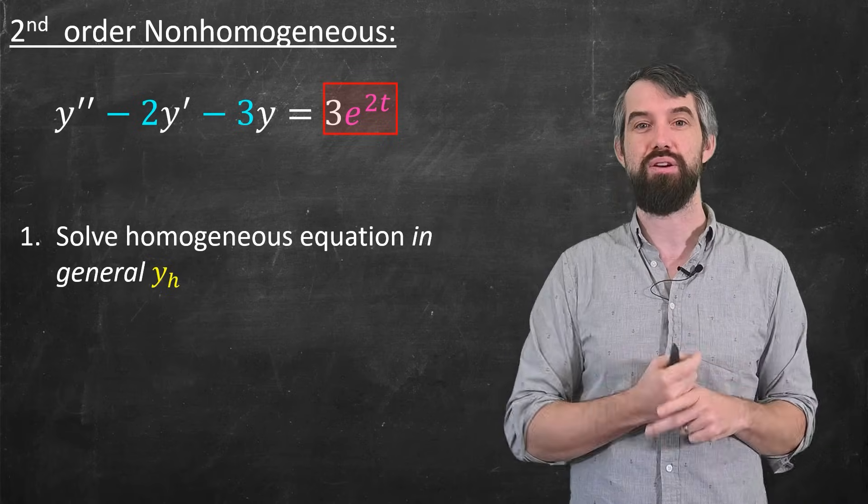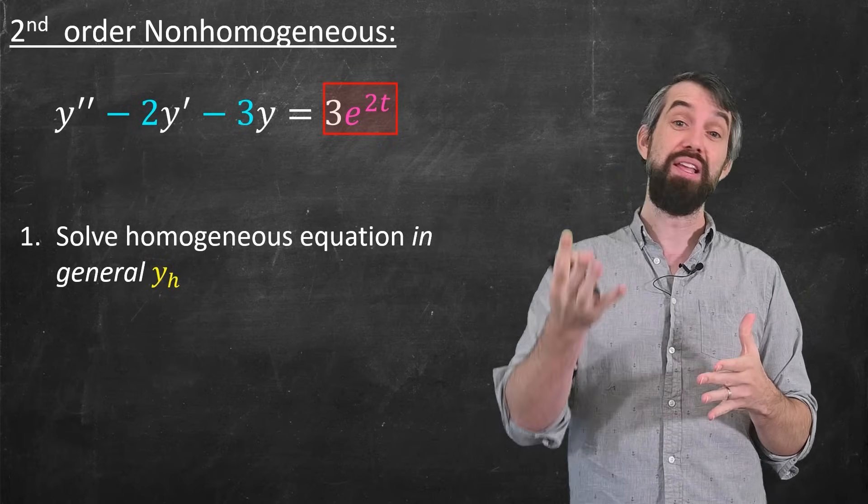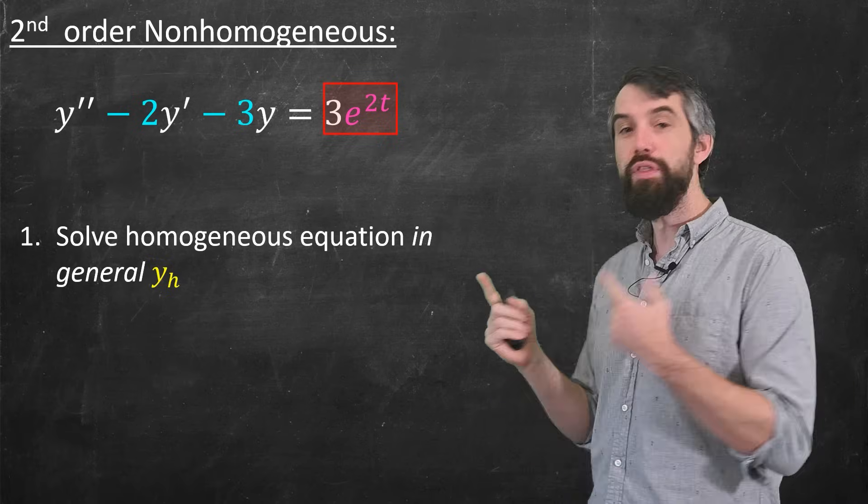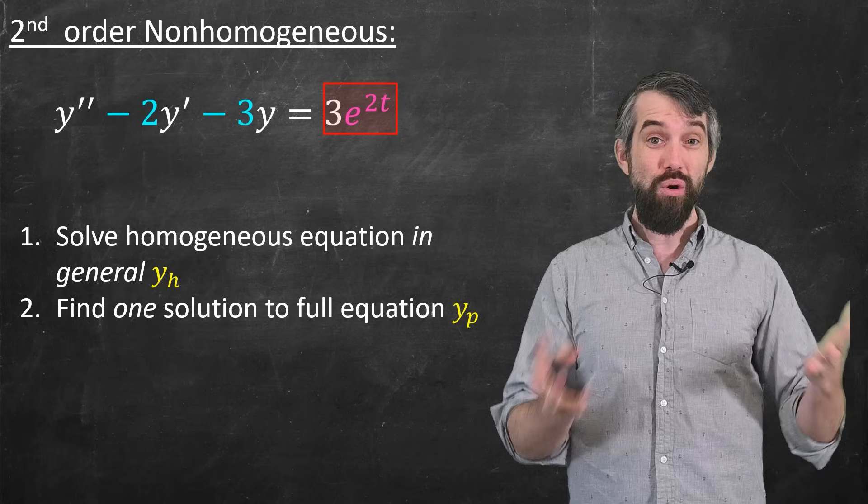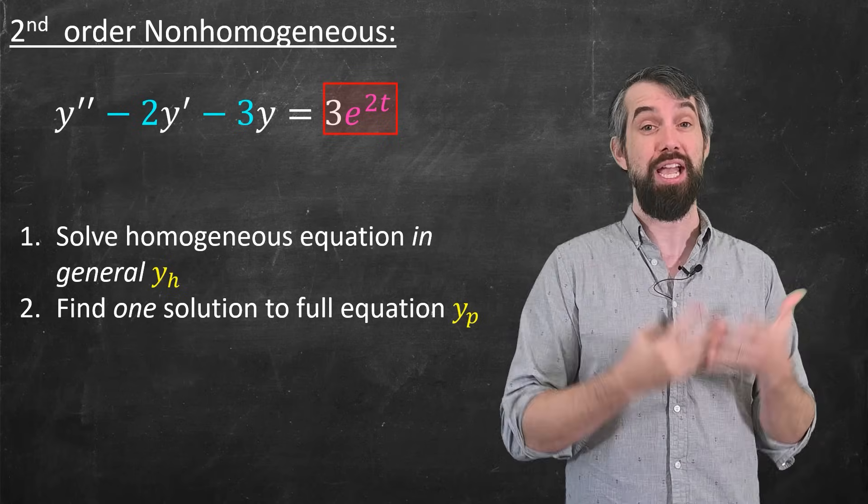And what I mean by a general solution is it's one that still has a constant. Remember there was a c1 e to the rt and a c2 e to the rt. These constants were unknown, but if I gave you initial conditions, then you go in and solve them.